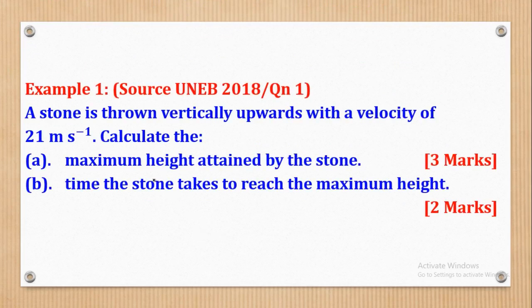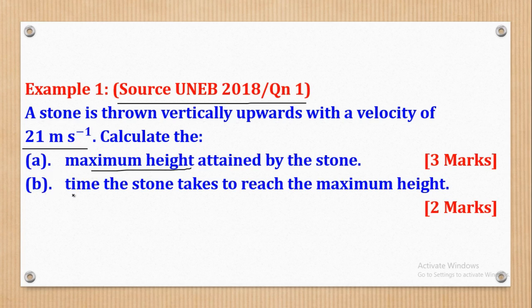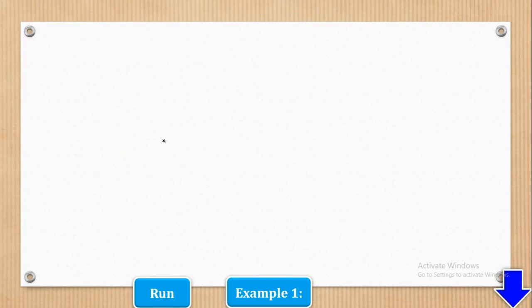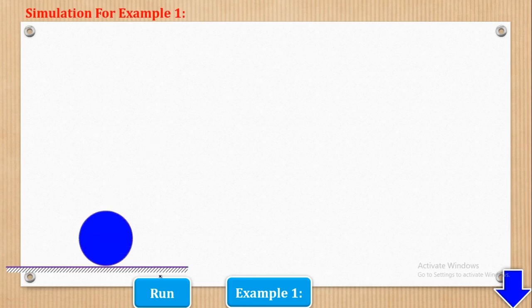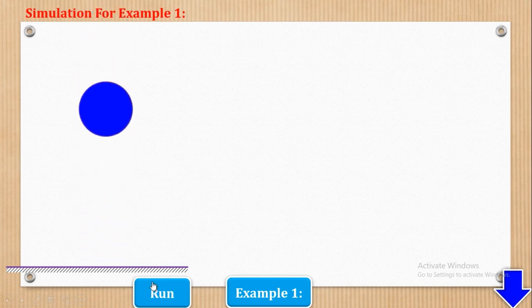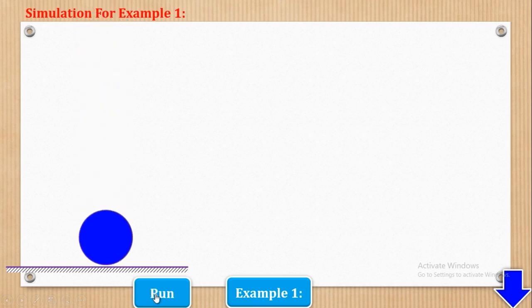With that knowledge, we shall now go through some examples. Example 1 comes from UNEB 2018, Paper 2, Question 1. We shall start with a simulation for the information given. We have the ground and the particle. When we run the simulation, we can see that it goes up to a maximum point and then returns back to its original position.